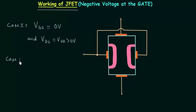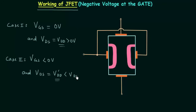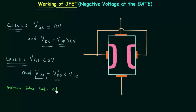In case number two, VGS is negative — it is less than zero volts — and VDS is equal to VDD prime. If you compare VDD and VDD prime, you will find VDD prime is less than VDD. The prime aim in case number two is to obtain saturation at a lower value of drain-to-source voltage VDS. So VDS in case number two is smaller than VDS in case number one.